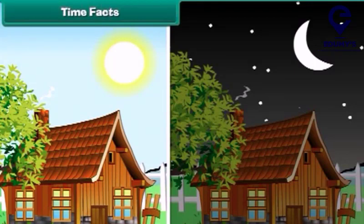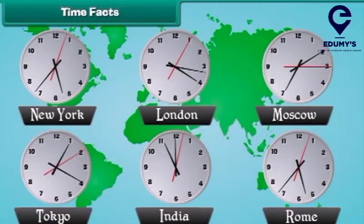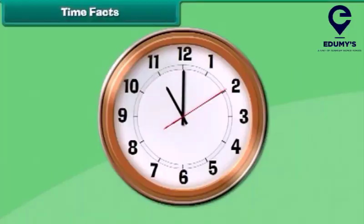As we just saw, at some places it is daytime and at others it may be night. Time changes when we move across the world. A clock is used to read time. A clock has three hands: the short hand tells about the hour, the long hand tells about minutes, and the thin hand tells about seconds.